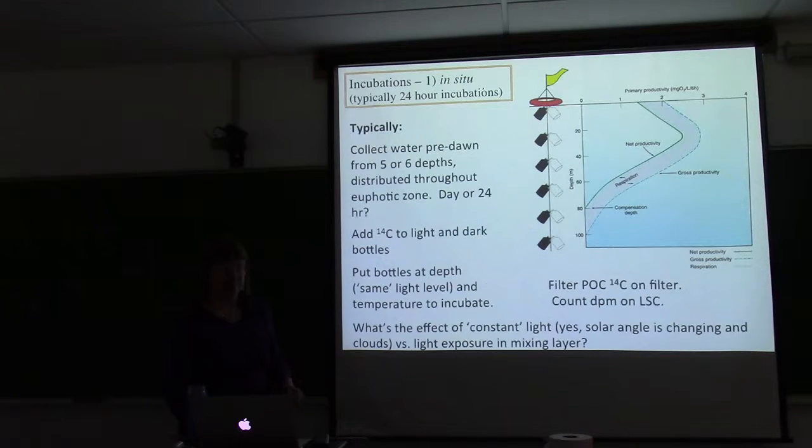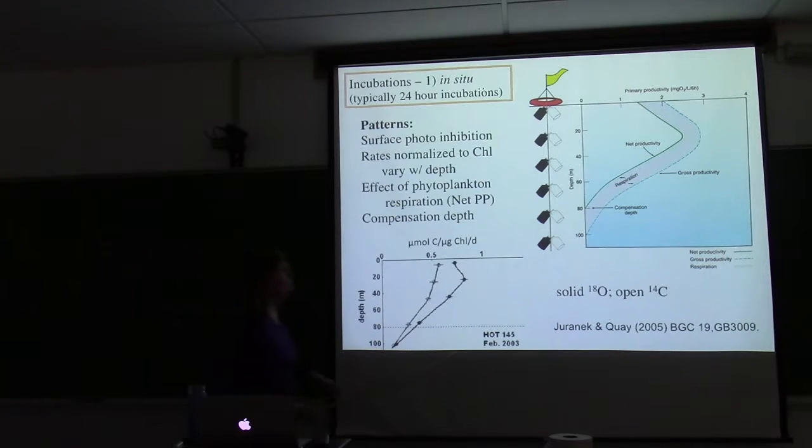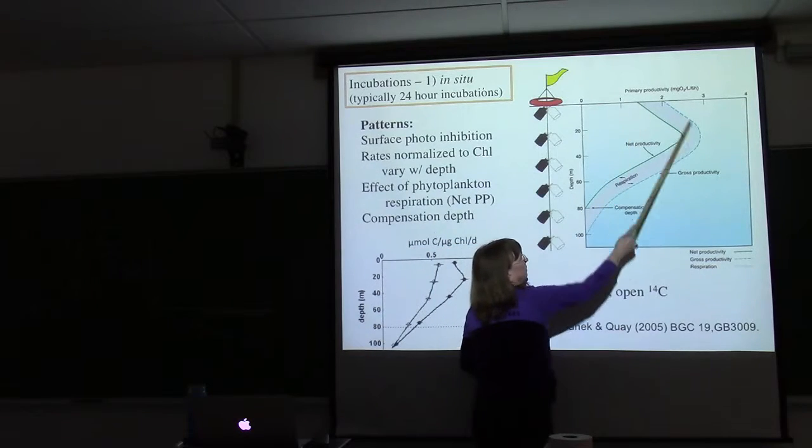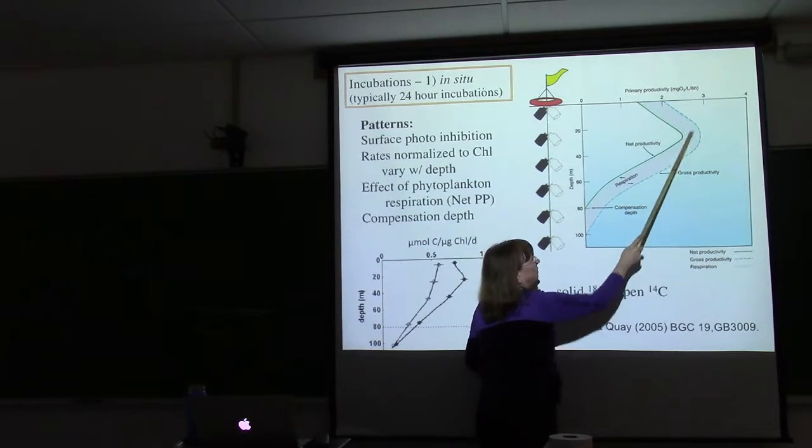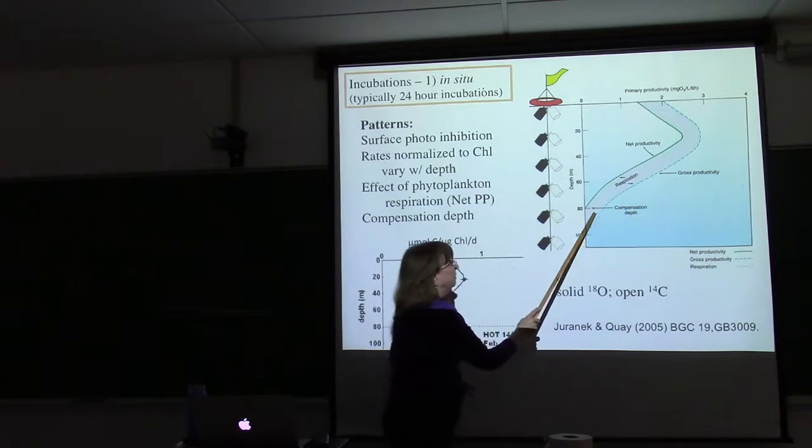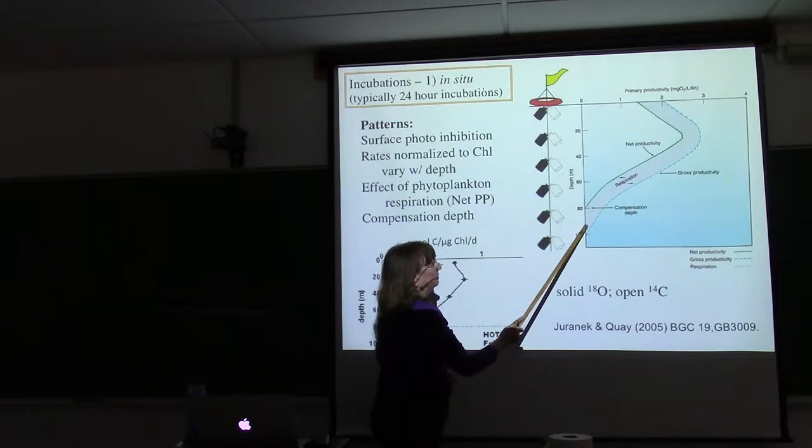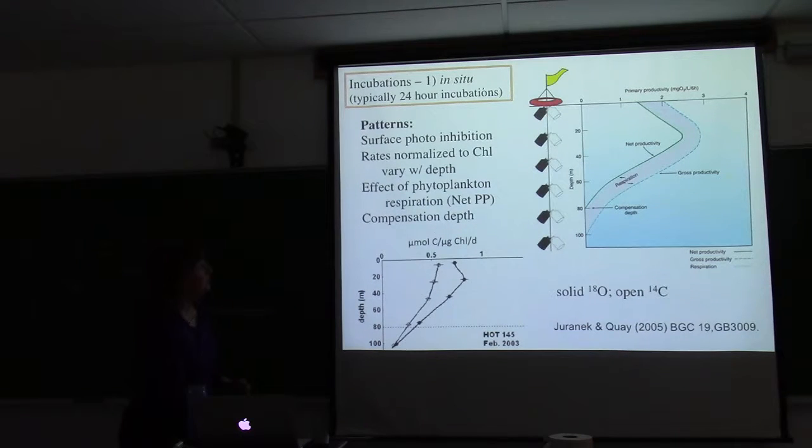But I think you're going to find this in any protocol. You almost always see something that looks like this: surface inhibition, a subsurface peak, and that's the optimum productivity. And then at depth, respiration exceeds the rate of photosynthesis.